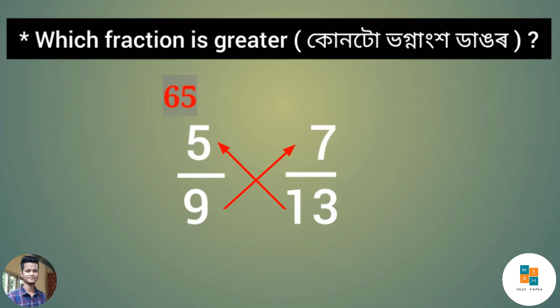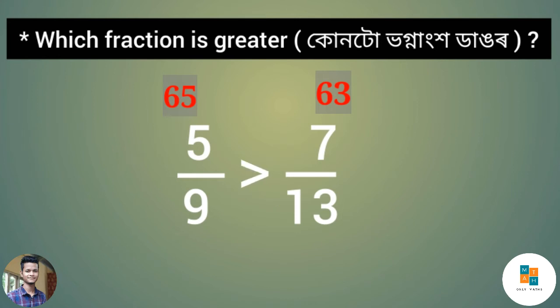5 times 13 is 65. Next, the first fraction's denominator is 9 and the second fraction's numerator is 7. 9 times 7 is 63. Write 65 above the first fraction and 63 above the second fraction. Since 65 is greater than 63, therefore 5/9 is greater than 7/13.